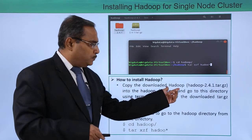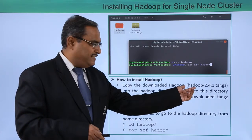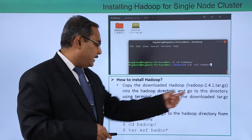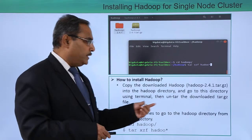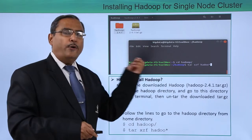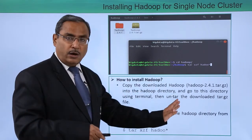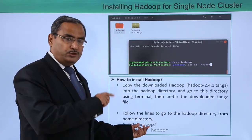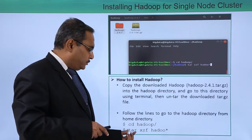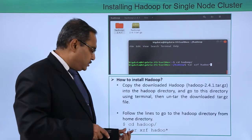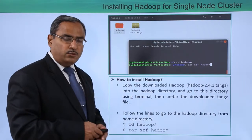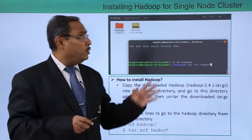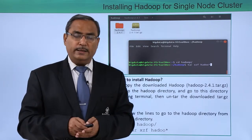Now copy the downloaded file 'hadoop-2.4.1.tar.gz' from the download folder into the Hadoop directory. Go to this directory using the terminal. Navigate to the Hadoop folder where the files were copied. Then execute 'tar xzf hadoop-2.4.1.tar.gz' for the untar operation. The tar.gz files will be untarred here. This completes the single node cluster installation of Hadoop. Thanks for watching this video.